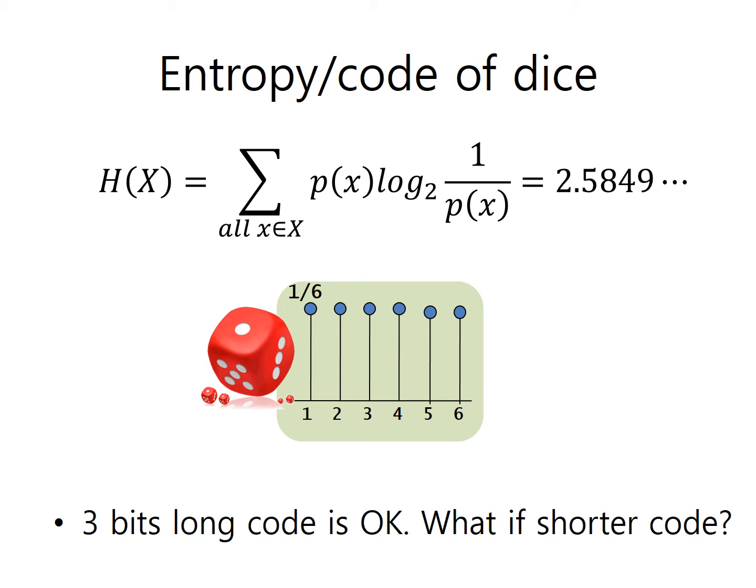How about the dice? The probability of each i on the dice is 1 over 6. If you calculate entropy with the entropy calculation formula mentioned earlier, the entropy is 2.5849.